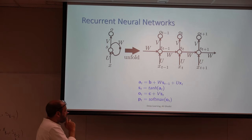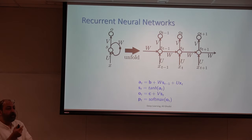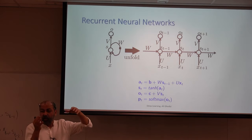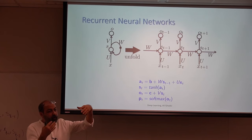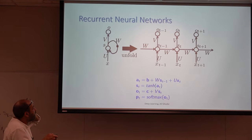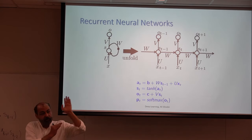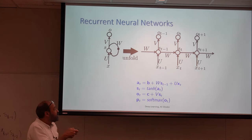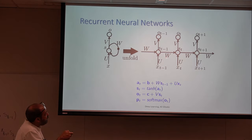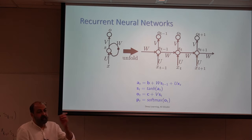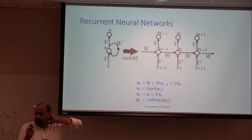Coming back to the concept of the perceptron: the perceptron had two parts — first, a linear summation of the previous nodes, and then non-linearity applied to that. It's going to be exactly the same here. Each A_t is basically W times S_{t-1} plus U times X_t. We have two inputs for each state — the current observation and the previous state — with different sets of weights. B is just bias, which is optional.